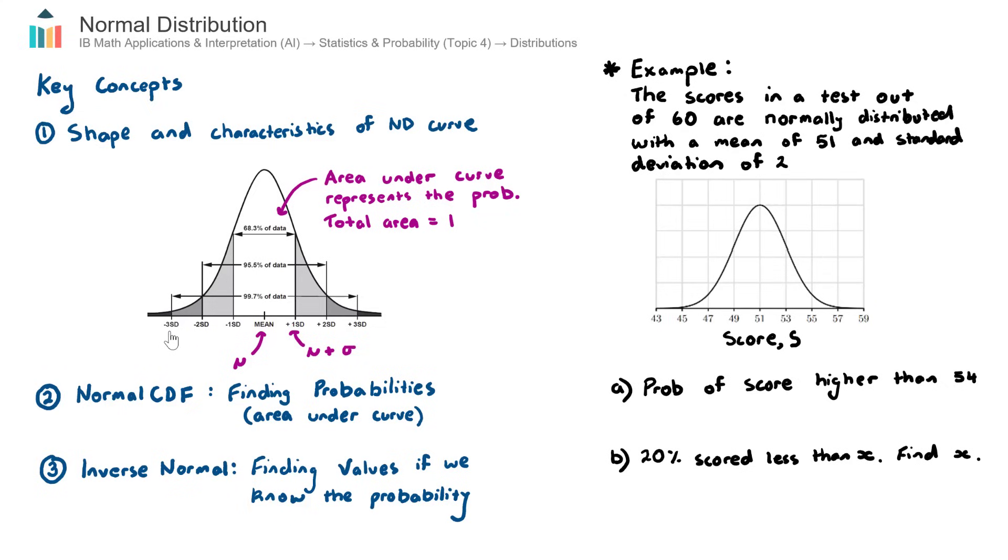Now, for a normal distribution set of data, we have, for example, between one standard deviation below and one standard deviation above, we expect that 68.3% of the data will lie between those two points, with mean being the center of those two points.